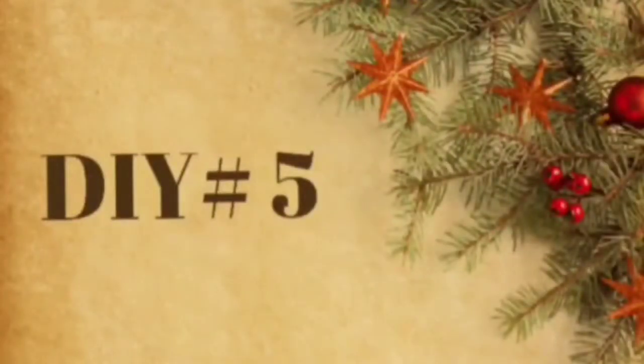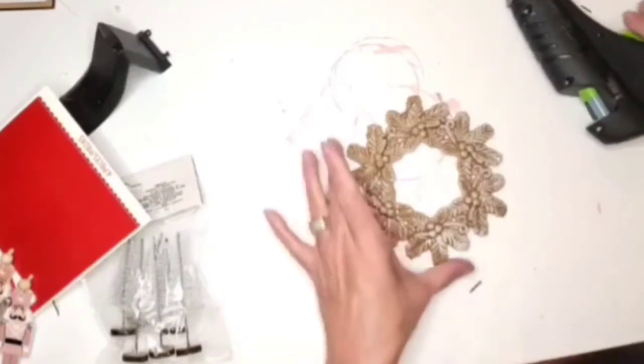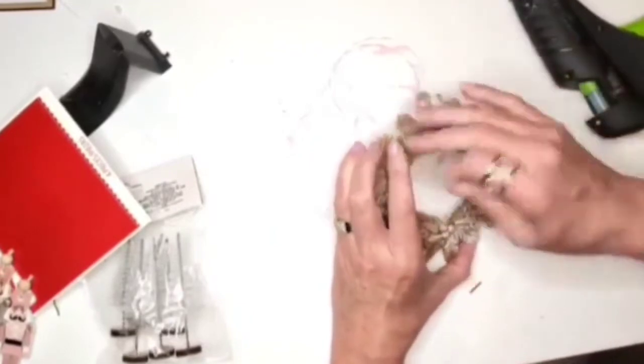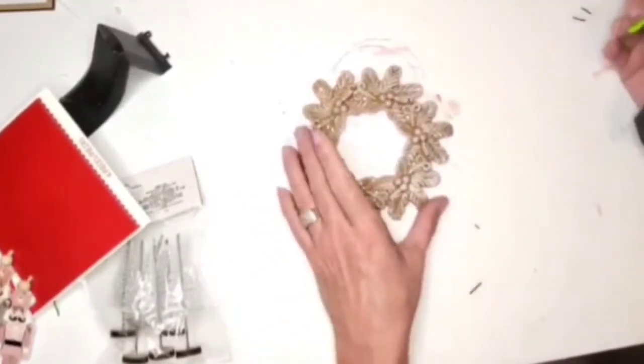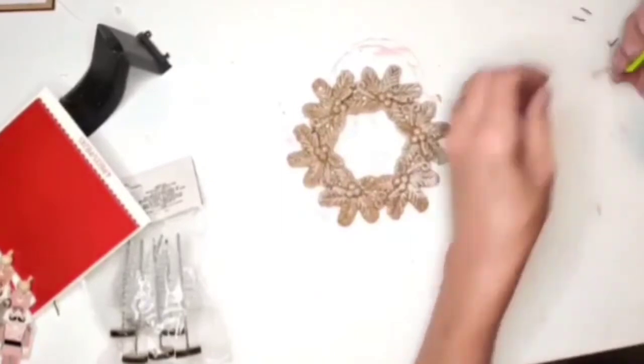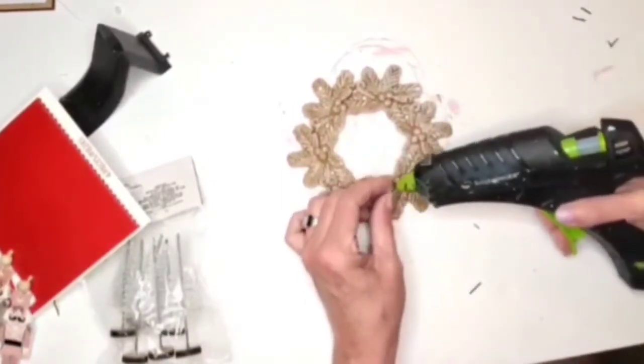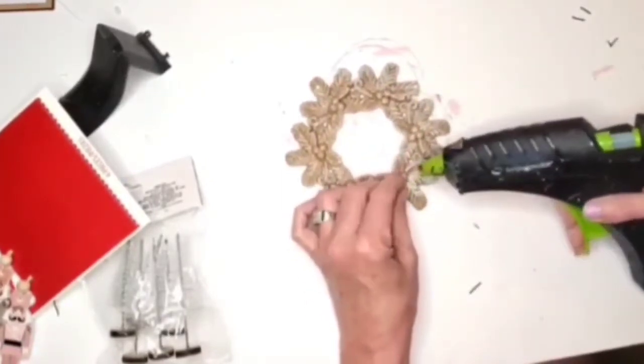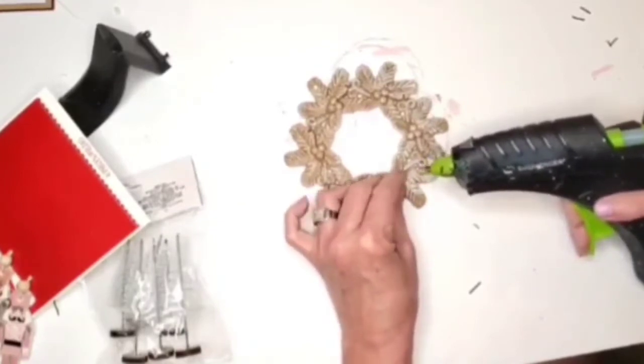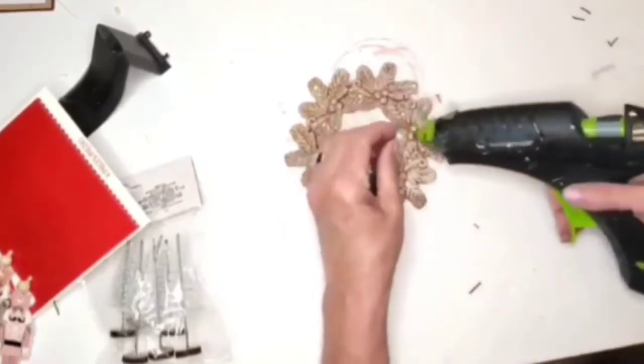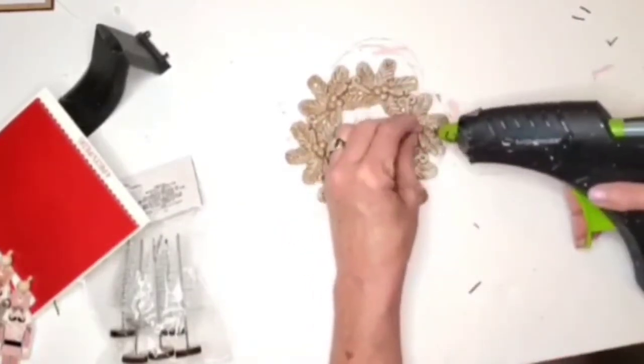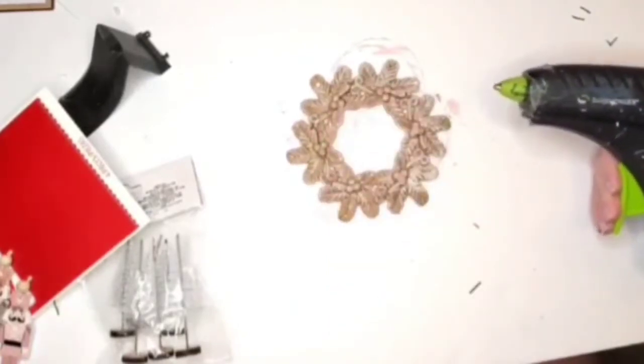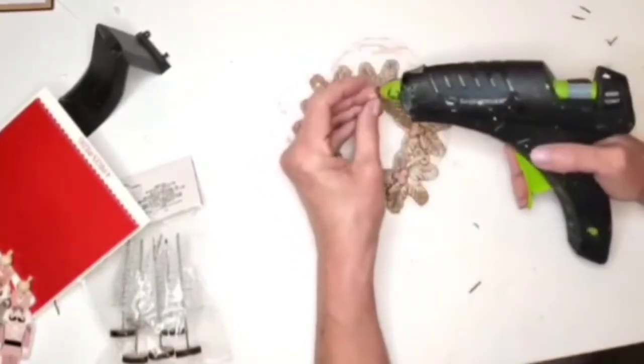DIY number five. Gotta have a wreath of some sort. What I'm doing here is I have these little beads, little pink beads that my daughter had picked up for me at Walmart. I'm going in and just adding them around the wreath. Well actually the wreath had these little berries, like indentions that look like berries.